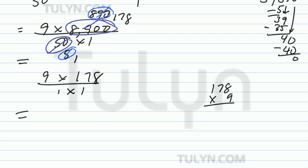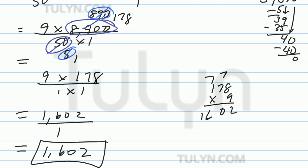178 times 9. 8 times 9 is 72, 7 on the top. 7 times 9 is 63, plus 7 is 70. 1 times 9 is 9, plus 7 is 16. So it's going to be 1,602 divided by 1 is 1,602. That will be your final product.